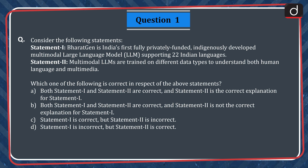A. Both statement 1 and statement 2 are correct and statement 2 is the correct explanation for statement 1. B. Both statement 1 and statement 2 are correct and statement 2 is not the correct explanation for statement 1. C. Statement 1 is correct, but statement 2 is incorrect. D. Statement 1 is incorrect, but statement 2 is correct.